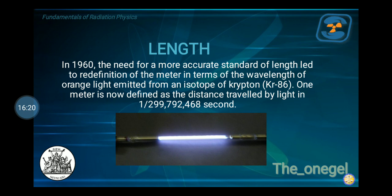Today, one meter is defined as the distance traveled by light in 1/299,792,468 seconds. It is no longer based on two engraved lines on a platinum-iridium bar — the current standard unit of one meter is based on the light emitted by a Krypton-86 atom. That is how precise our standard of measurement is.